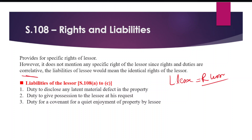Now let's see what the liabilities of the lessor are. In Section 108, from clause A to C. The first is the duty to disclose any latent material defects in the property. A latent defect means it is hidden — a material defect which is necessary to know about.